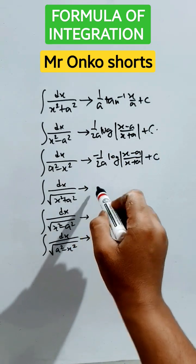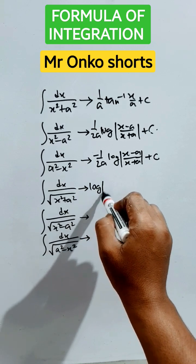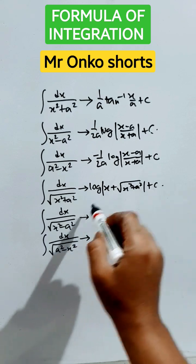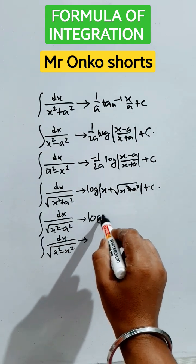Now this is √(x²+a²), that is log|x + √(x²+a²)| + c. Now √(x²-a²), that is log of x + √(x²-a²) + c.